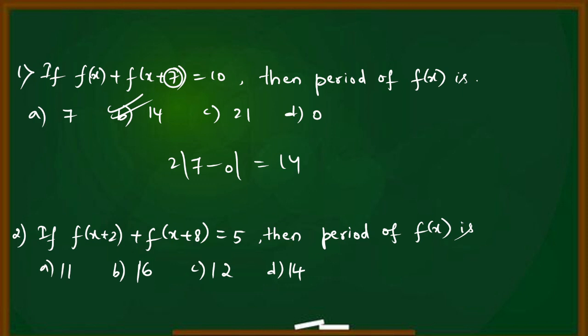Second question: If f(x+2) + f(x+8) = 5, then the period of f(x). Period of f(x) is 2 modulus of b minus a. b is 8 minus a which is 2. That equals 2 into 6, which equals 12. Option c.